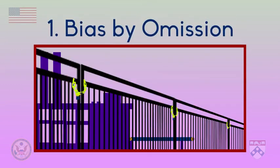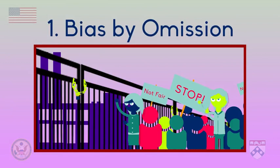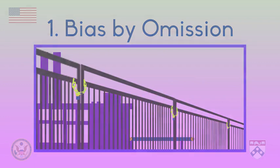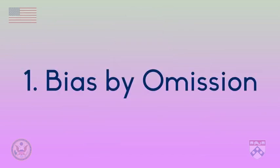The first type we'll introduce is bias by omission. Let's say that on Ronnie's website there is a big story about how angry people are that a local factory is about to close. Adithi's website also has a story about the closing factory, but it doesn't mention that anyone is angry. This information has been omitted, or left out of Adithi's news website. If that information is important, then we are seeing bias by omission.